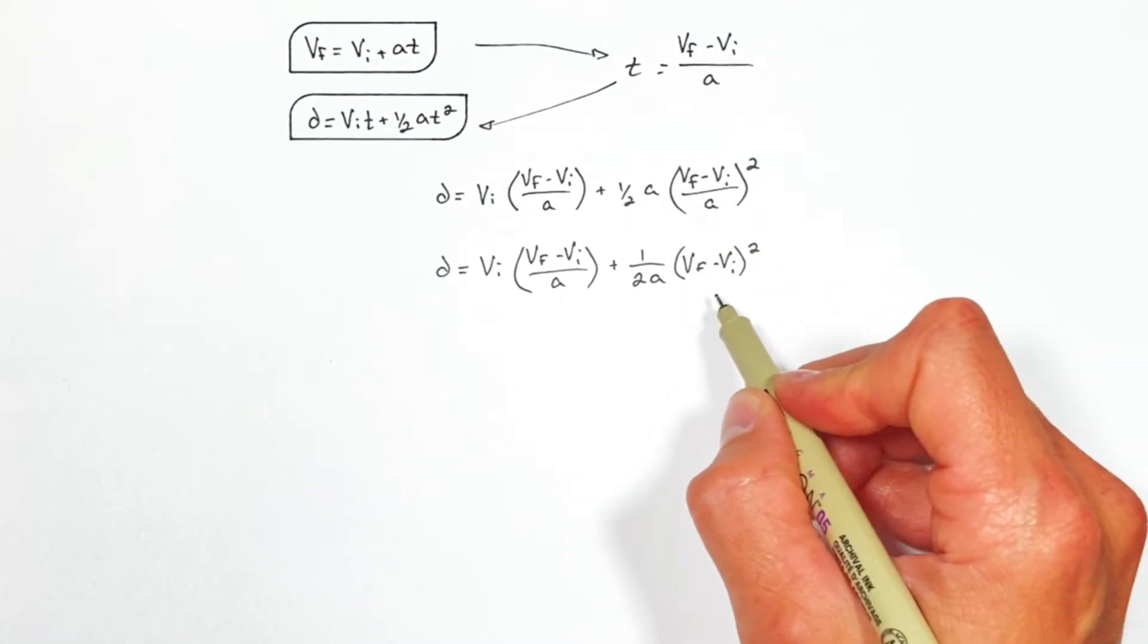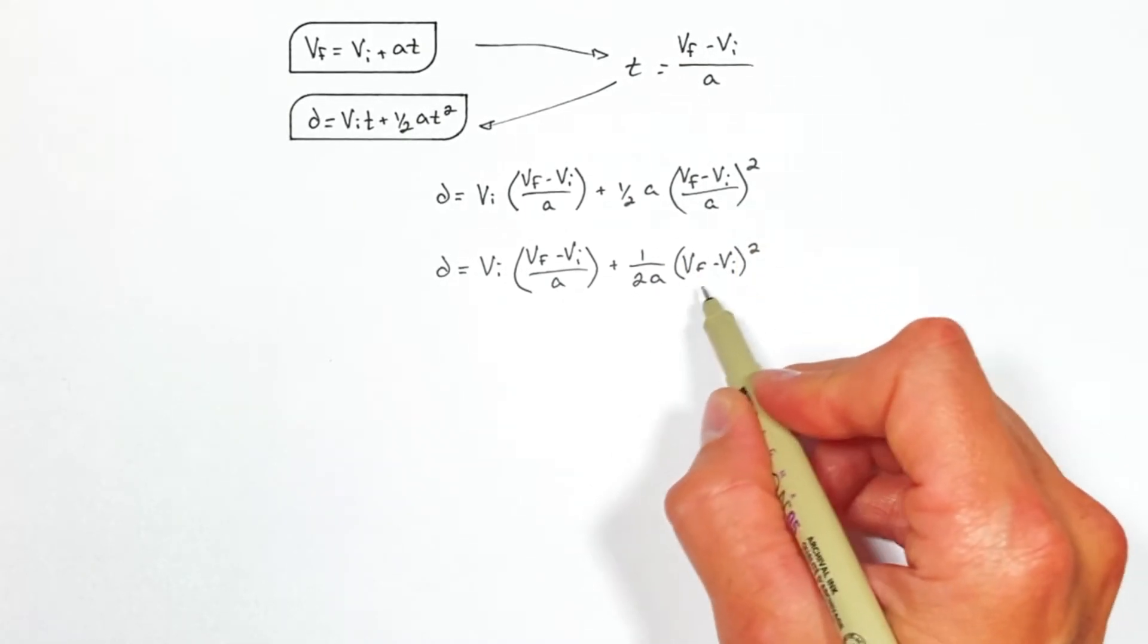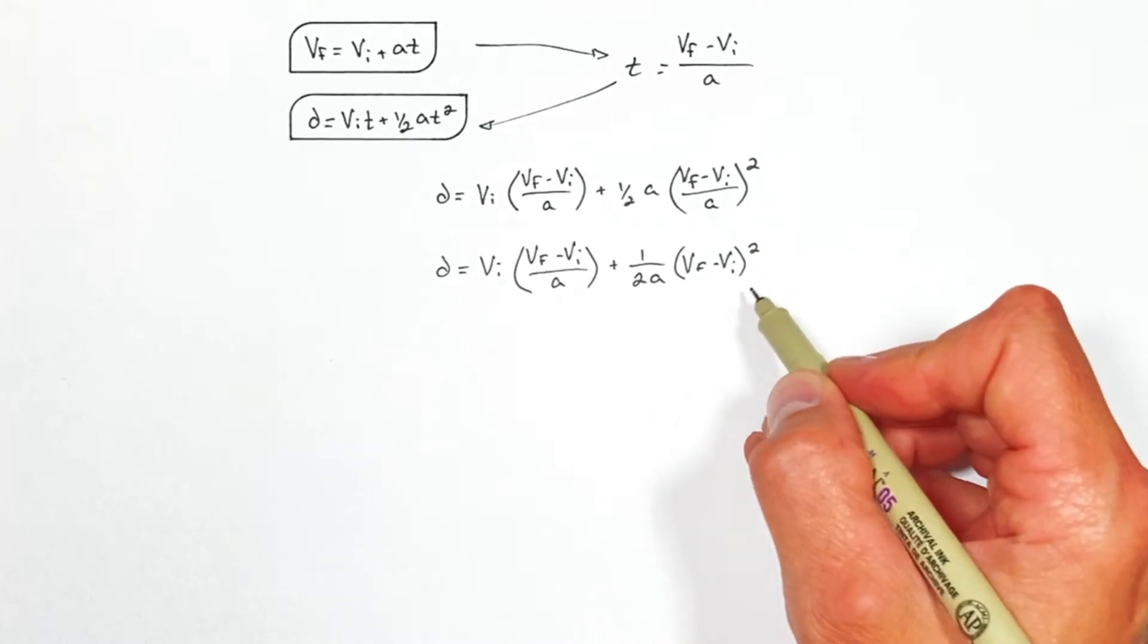And then we're going to get to do everybody's little favorite bit of algebra and that is foil out this VF minus VI squared term.